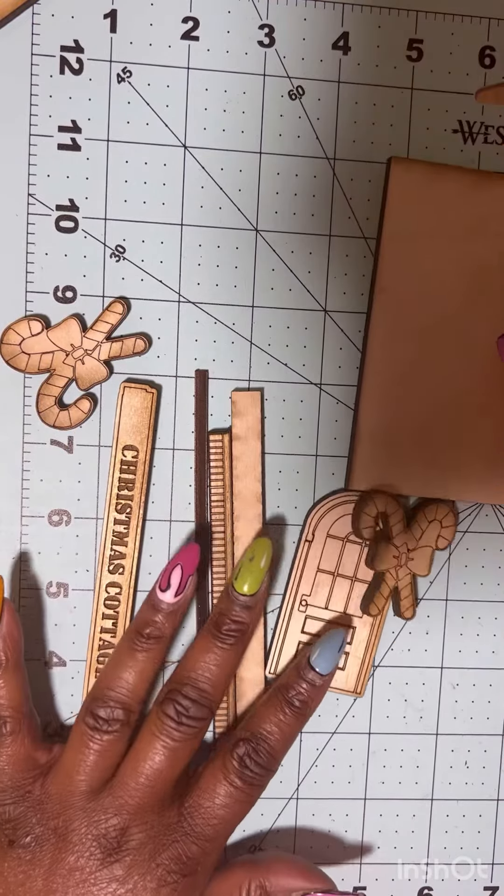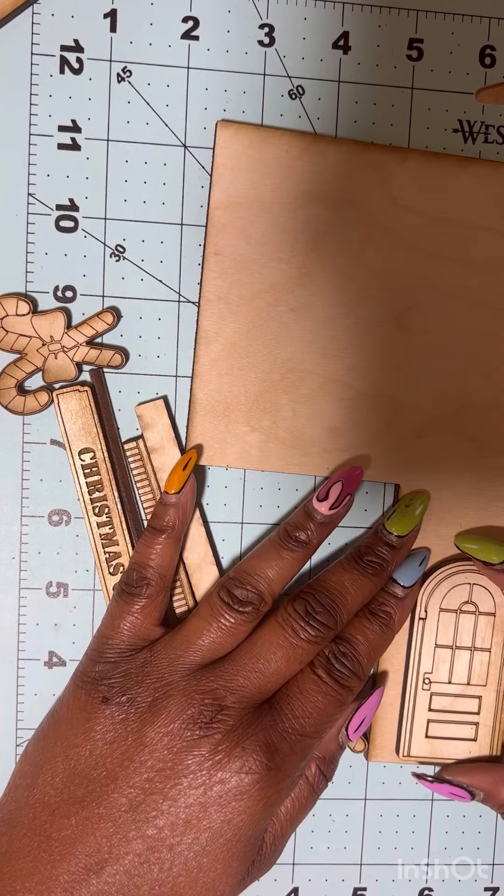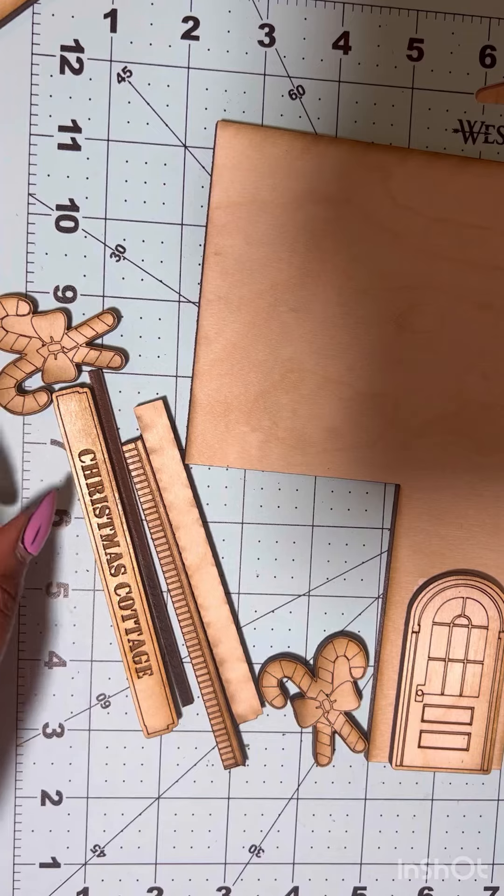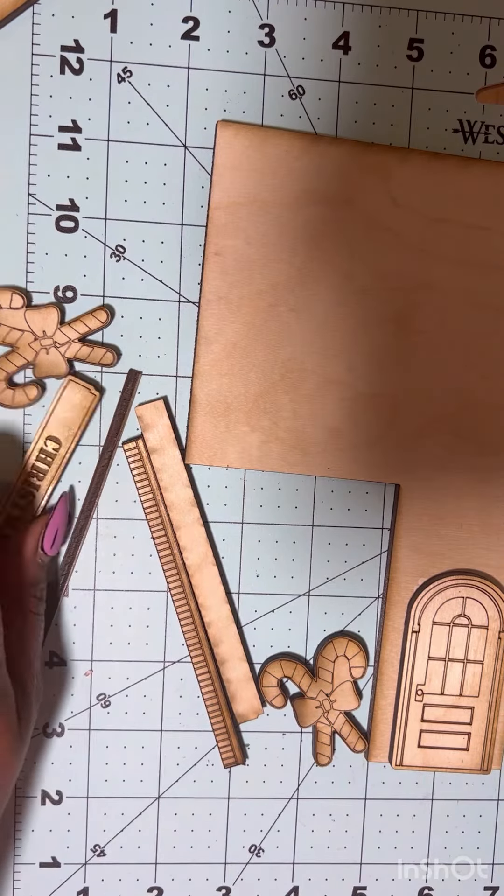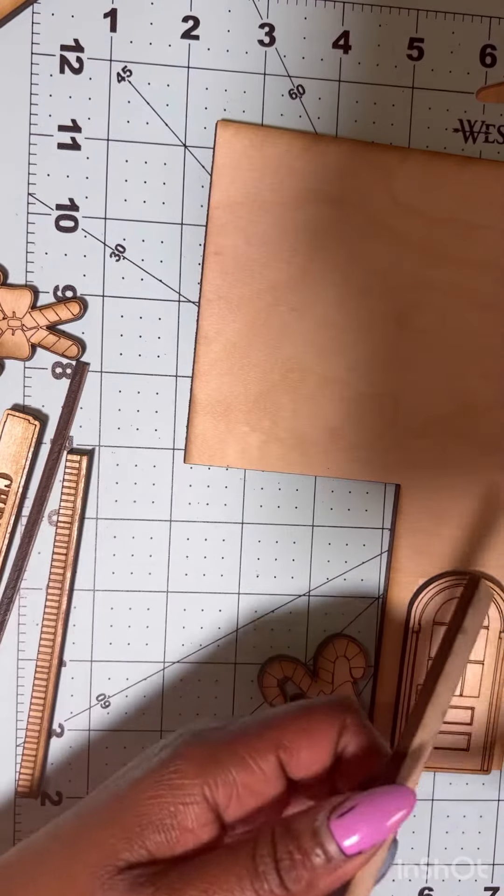So I'm just going to start with gluing on these little pieces, like the decoration pieces first. I'm going to go on the door and I also made like a little sign and just some little decorations for the top of the building.